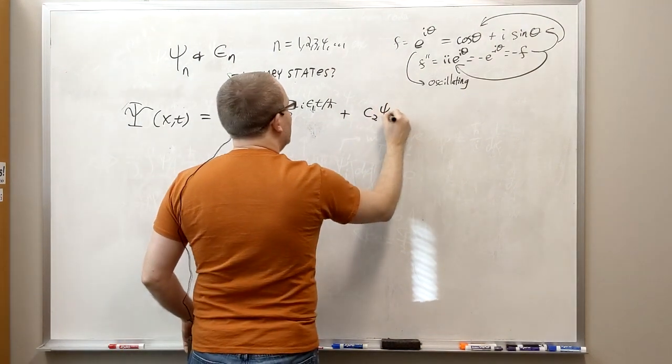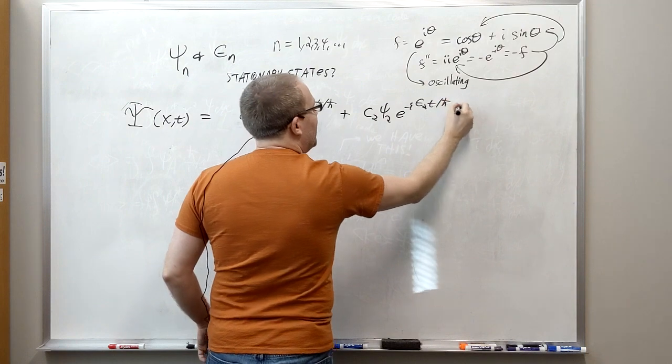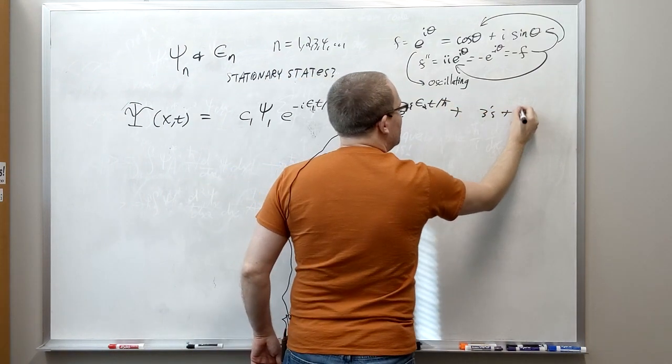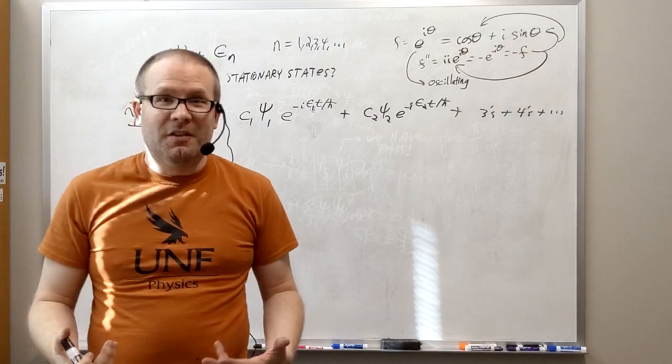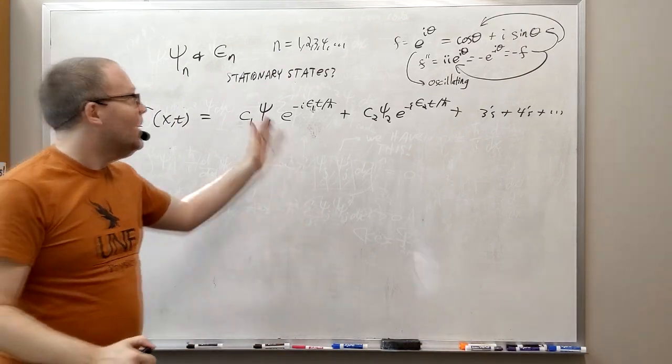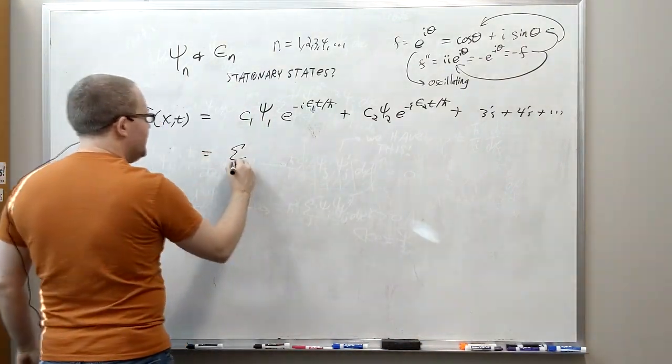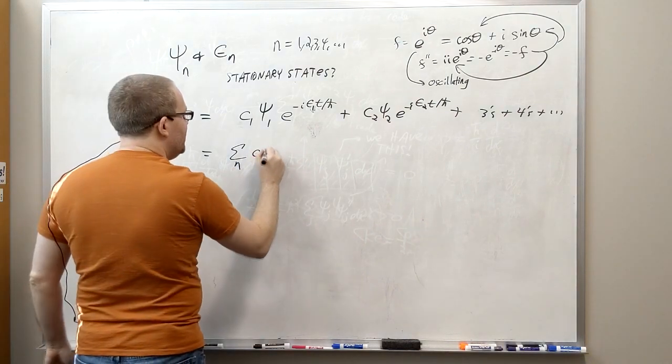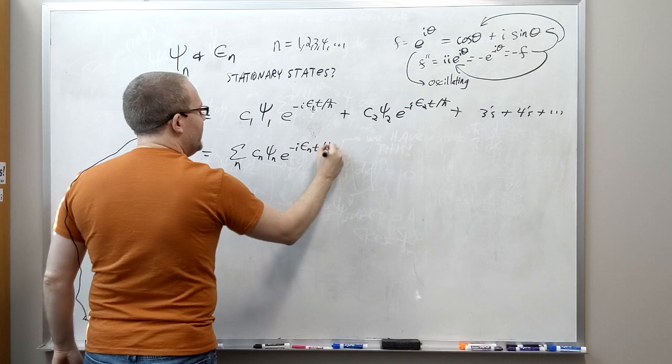You can do that with each one of these pairs of e_n and psi_n that you got. So you can have c_2, psi_2, e to the negative i, e_2 t over h bar. You can do it for the threes. You can do it for the fours. You can do it for however many you got. Maybe you got 100 out of the shooting method code. The generic way of writing it is a summation on n of c_n, psi_n, e to the negative i, e_n t over h bar.